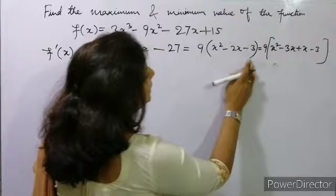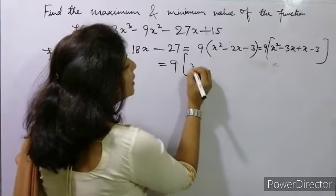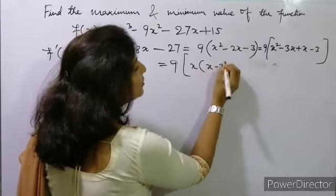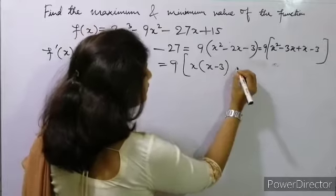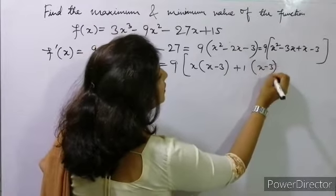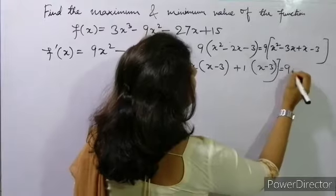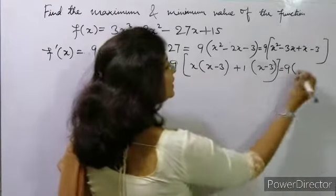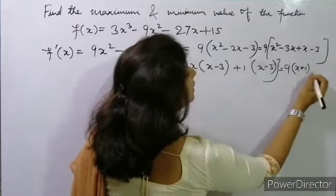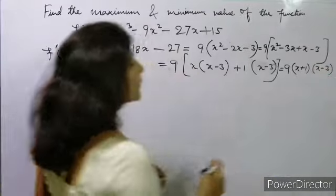Solving in detail: x takes common (x - 3), then 1 takes common (x - 3). So our value will be 9(x + 1)(x - 3).